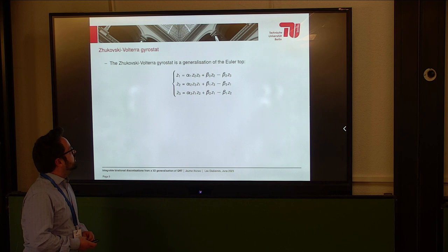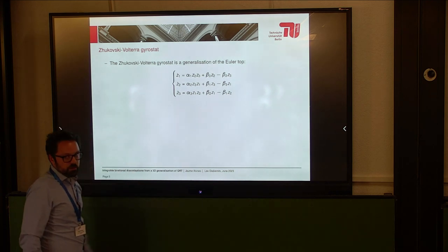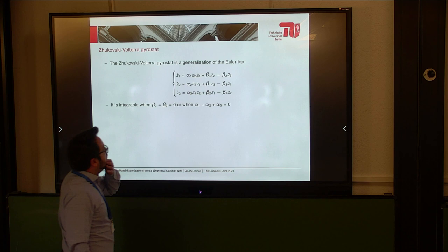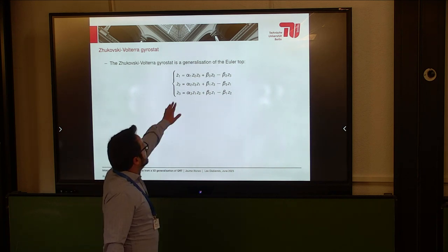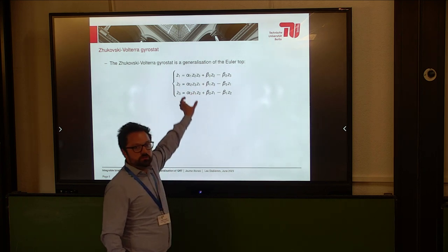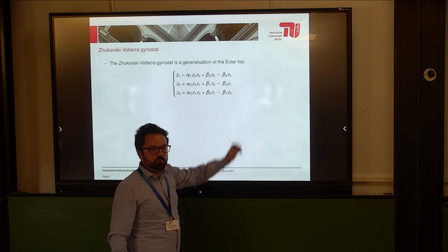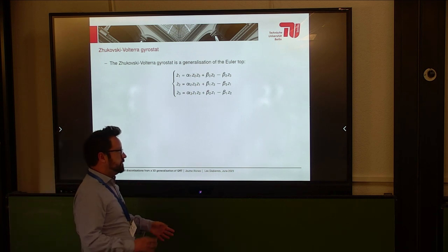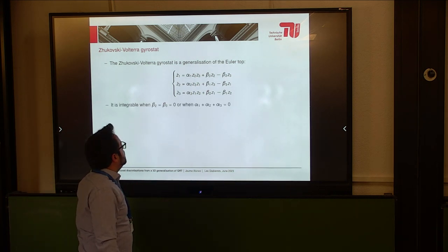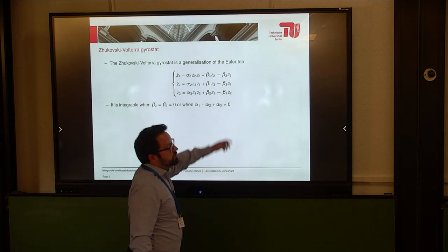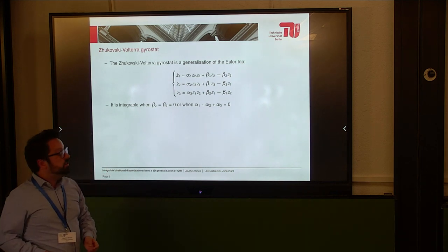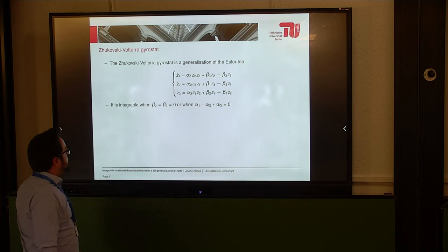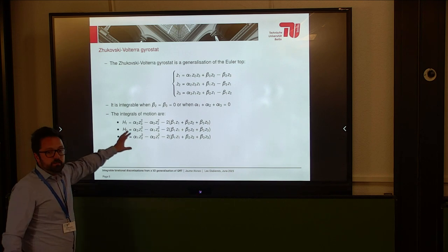Consider the Zhukovsky-Volterra-Giroth system. It's a system of differential equations, normal and complex. If I would set all the betas to zero, so I would only have the alphas, this would be the Euler top — the Euler top with some linear terms added. It corresponds to a physical system. This system is integrable in the physical conditions, so-called, which is when the sum of alphas is equal to zero, and also when two of the betas are zero. It doesn't matter which ones, because it's symmetric. And these are the integrals of motion, very similar to the Euler top.